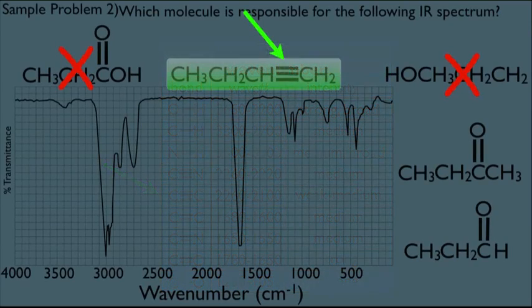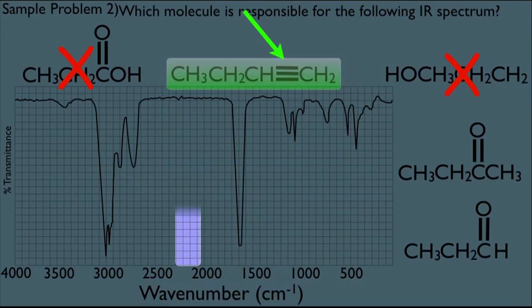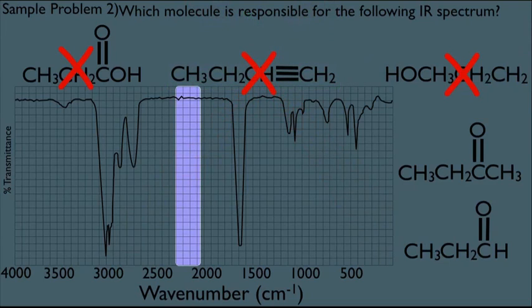So let's go back to our IR spectrum here. That would be this region right here. And notice nothing. There's nothing going on there. So let's rule out that molecule right there. Now, that leaves us with the last two remaining molecules.